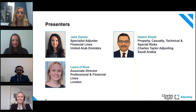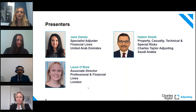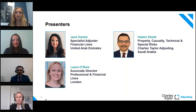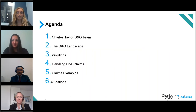Laura O'Brien is Associate Director, Professional and Financial Lines, joining us from London today. She is both a barrister and a solicitor and specialises in D&O and professional liability. We are also joined by Hatem Kedah, who has managed a variety of high-value commercial losses within Saudi Arabia since joining CTA in 2010. Jane will be providing an overview of the landscape in the Middle East and an overview of wordings. Laura will discuss handling D&O claims and take you through some claims examples, and then we will have some time for Q&A at the end.